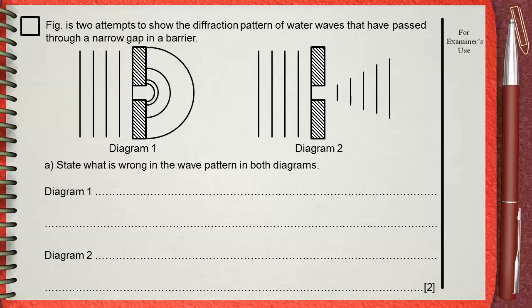It just changes the shape of the wave fronts of the waves. It's clear in diagram 1 that the wavelength of the diffracted wave after the gap is not equal to the wavelength of the incident wave before reaching the gap.